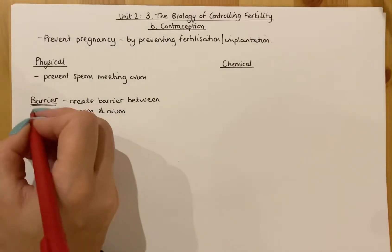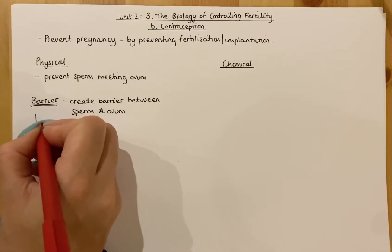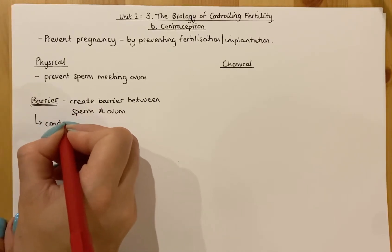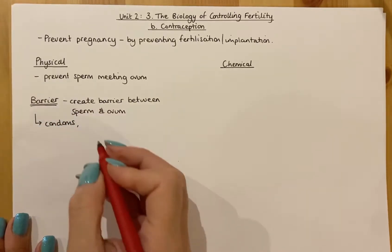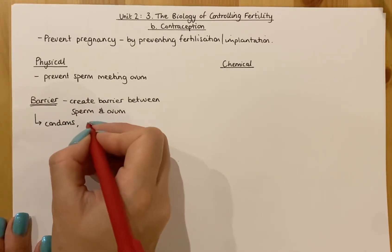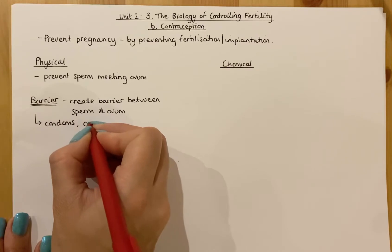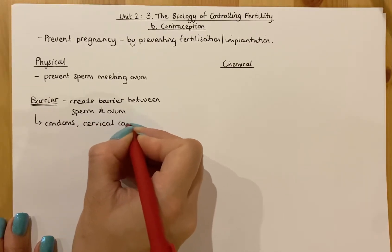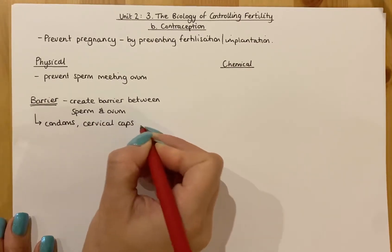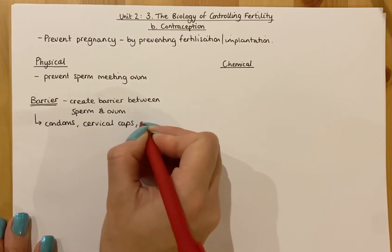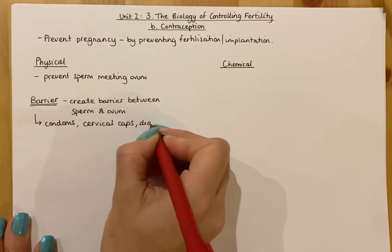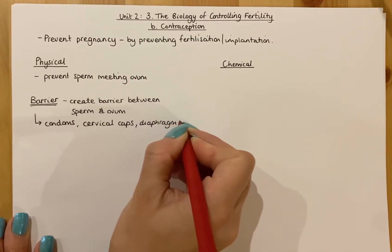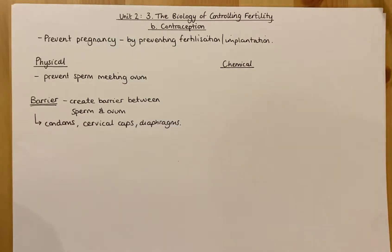Barrier methods include condoms, worn by males; cervical caps, worn by females; and also diaphragms, which are also worn by females.